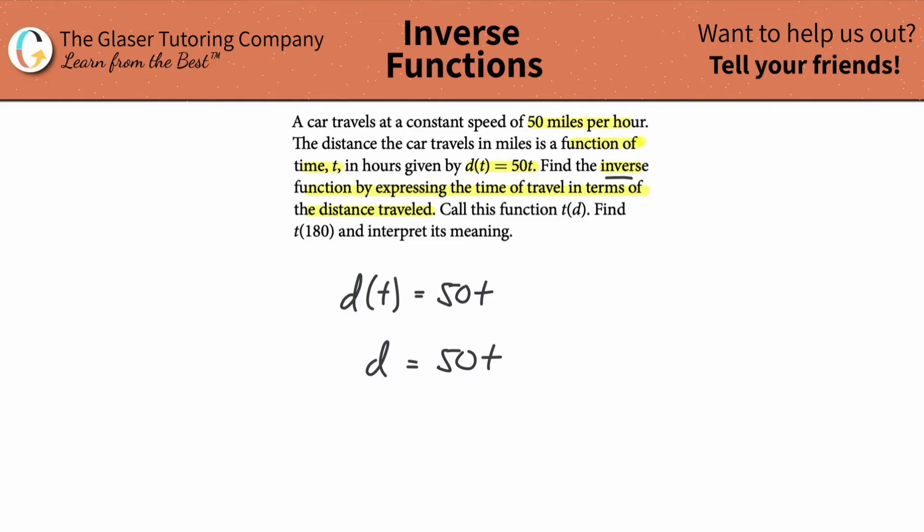So now it's asking, okay great, so we understand that. Now it's saying find the inverse function by expressing the time of travel in terms of the distance traveled. Oh boy, right? What the heck does that mean? All this means is solve. I don't know where the F is. Solve, too many functions on my mind. Solve for t.